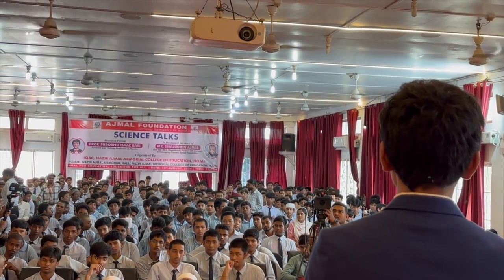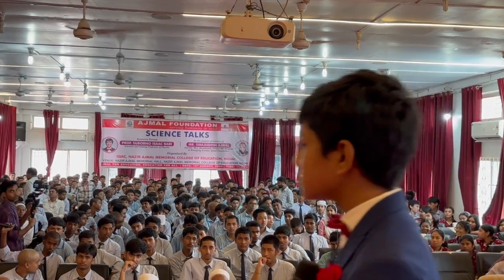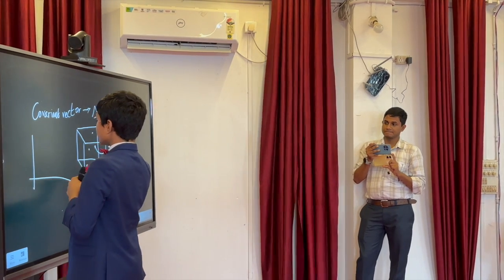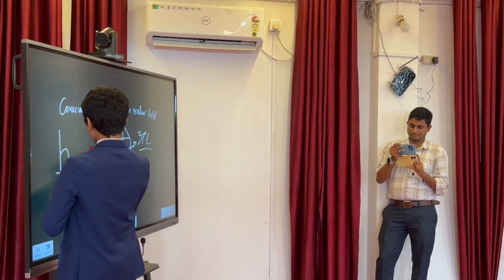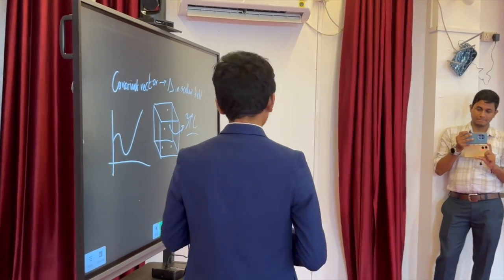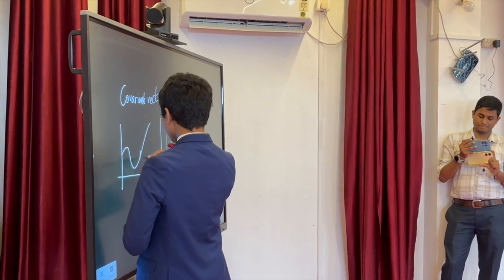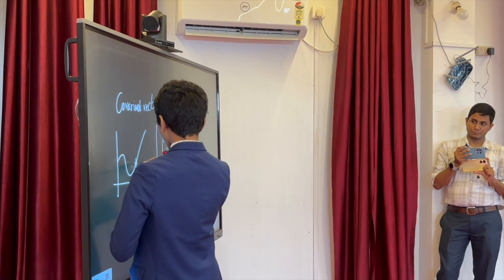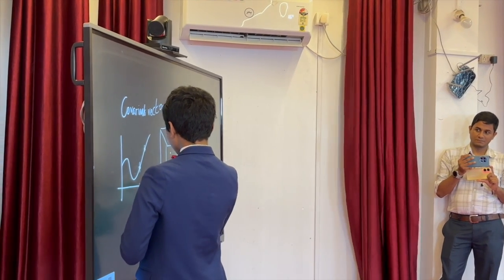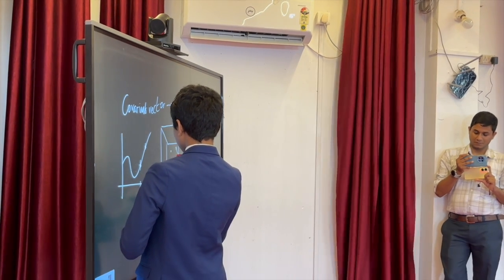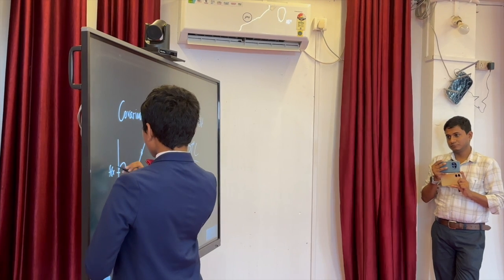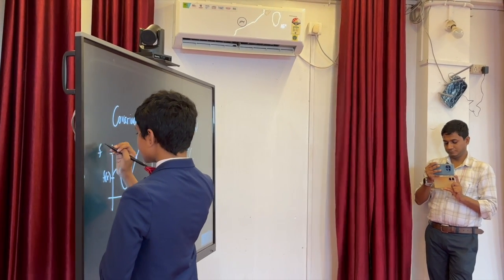Here's what a derivative is. Let's say we have a function. What we're going to do is take one point right over here, and then another point right over here. Let's say this is x and this is x plus h. The y-coordinate here is f(x), and the y-coordinate here is f(x + h).